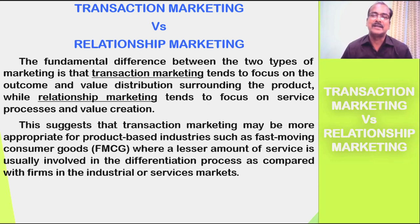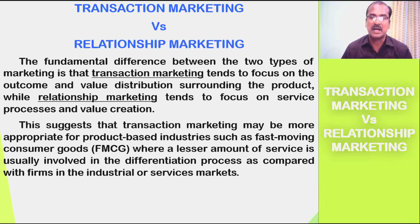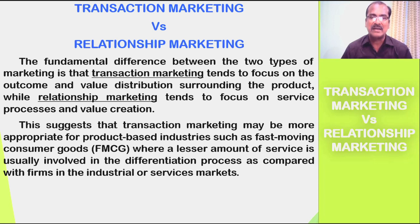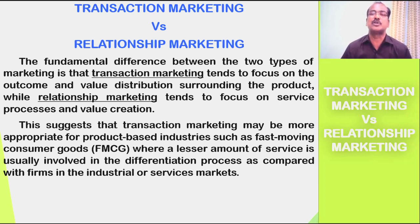This suggests that transaction marketing may be more appropriate for product-based industries such as fast-moving consumer goods industries — that is, FMCG industries — where a lesser amount of service is usually involved in the differentiation process, as compared with firms in industrial or service markets. In FMCG markets, the service offered by marketers is very minimal. But in industrial and service markets, the success of a company greatly depends upon the quality of service it offers to create value for customers.